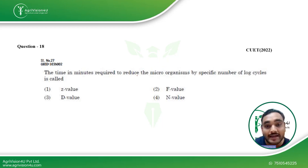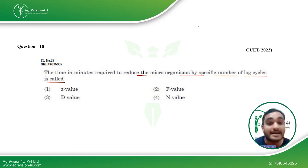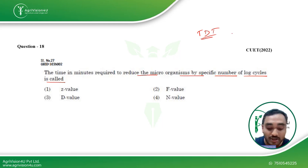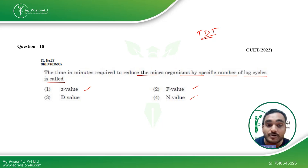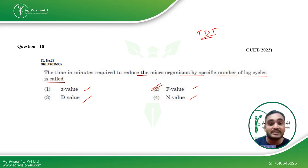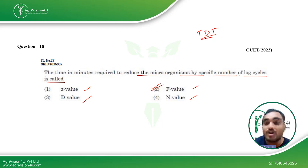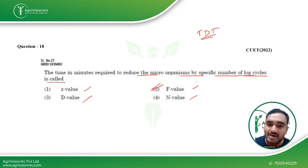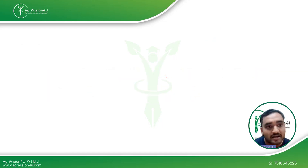Coming to the next question: the time in minutes required to reduce microorganisms by a specific number of log cycles is called what? As discussed, the thermal death time curve — the TDT curve — is very important for the exam. For this question, your F value is the answer: it is the time required in minutes to reduce microorganisms by a specific number of log cycles. A very direct question — you can straight away mark F value as the answer.